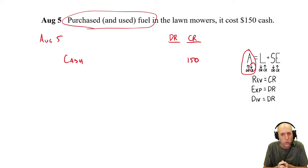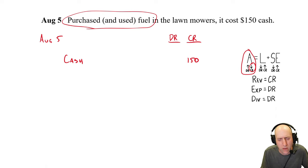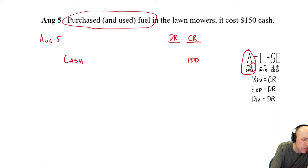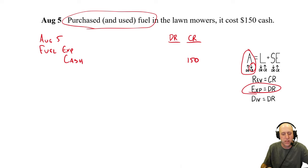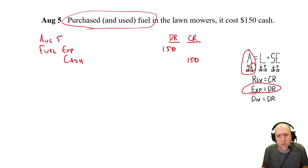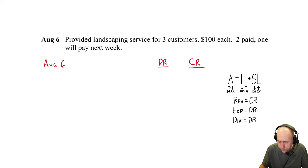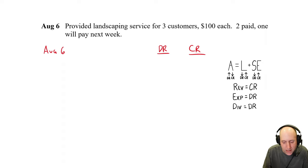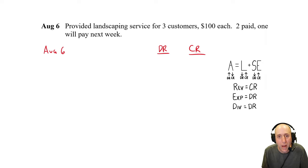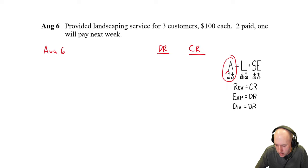For August 10th, the credit: we did work. You could call it sod installation revenue or just landscaping revenue — I'll keep it simple and use landscaping revenue throughout this problem. Revenues take a credit, so credit landscaping revenue $2,000. August 11th: collected the amount owing from August 6th — that was the $100 customer. Did cash change hands? Yes. Cash is going up, so debit cash $100. The credit is to accounts receivable — we had $100 AR and now it's going down. The customer has paid; we're ripping up the IOU.